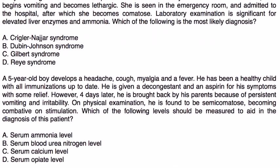Next question: a five-year-old boy develops headache, cough, myalgias, and fever. He has been a healthy child with all immunizations up to date. He is given a decongestant and aspirin for his symptoms with some relief. However, four days later he is brought back by his parents because of persistent vomiting and irritability. On physical exam he is found to be semi-comatose, becoming combative on stimulation. Which of the following levels should be measured to aid in the diagnosis?